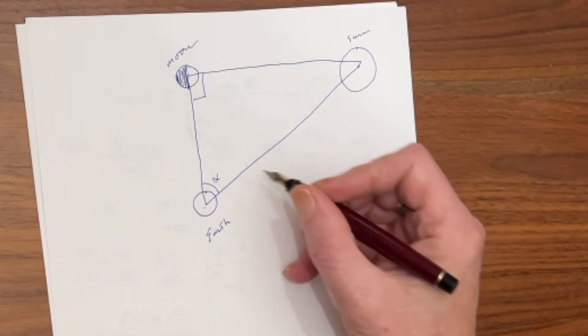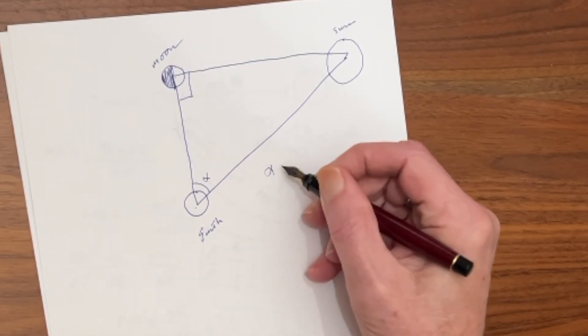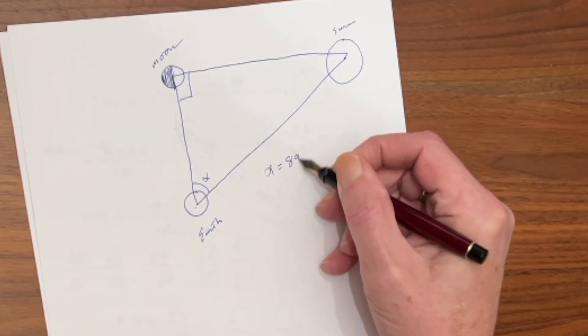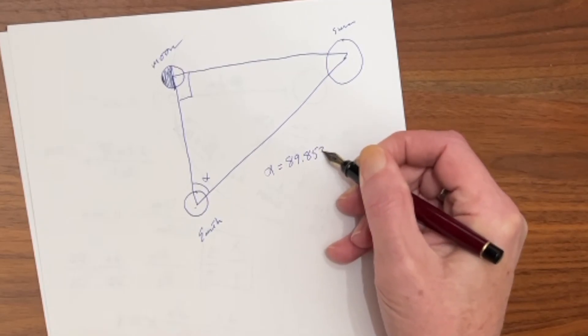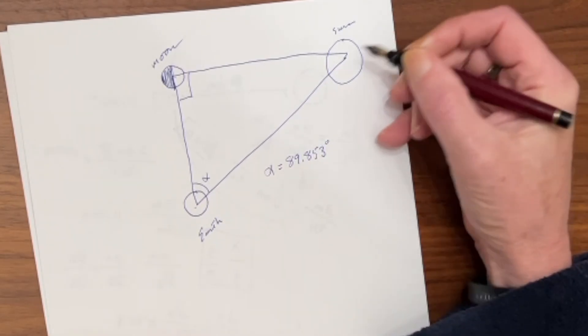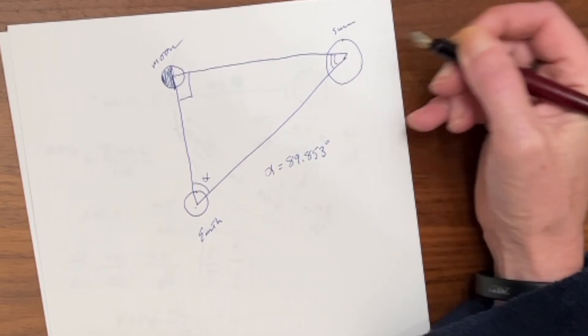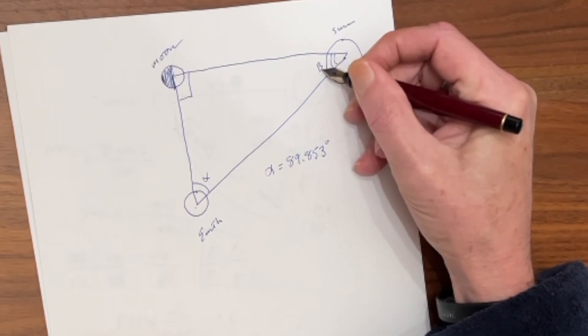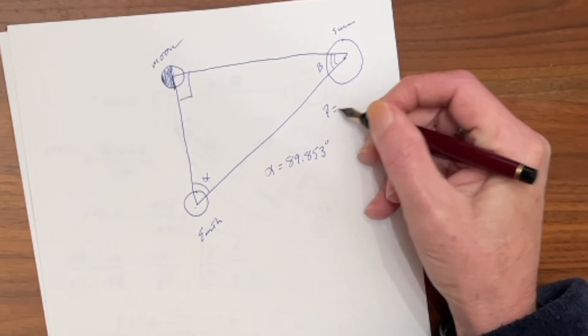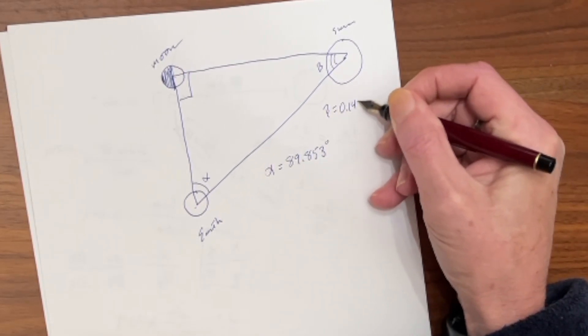However, with modern determinations, we know that this angle alpha equals 89.853 degrees. That means that this angle out here, which is angle beta, equals 0.147 degrees.